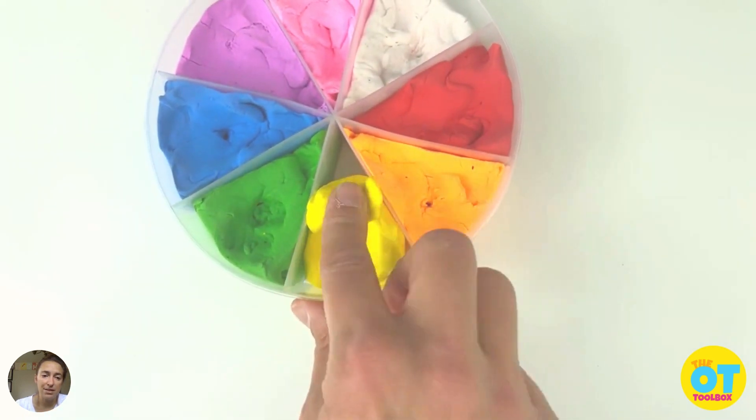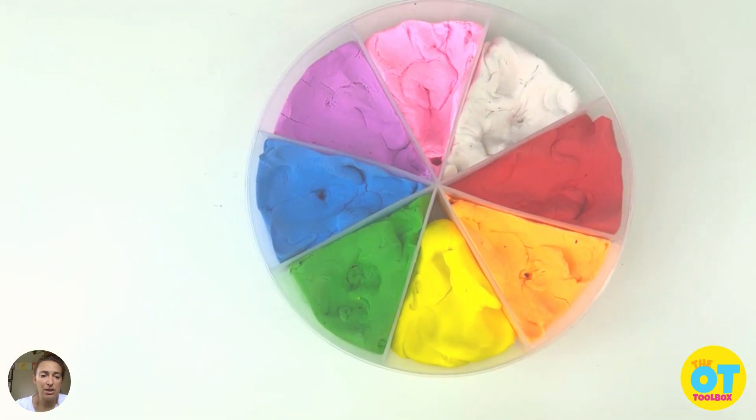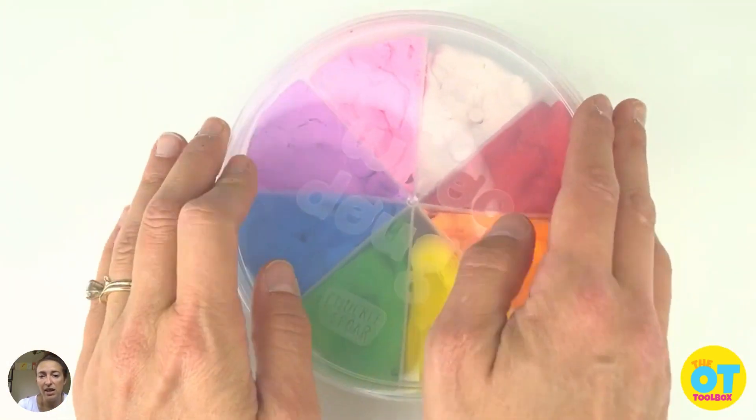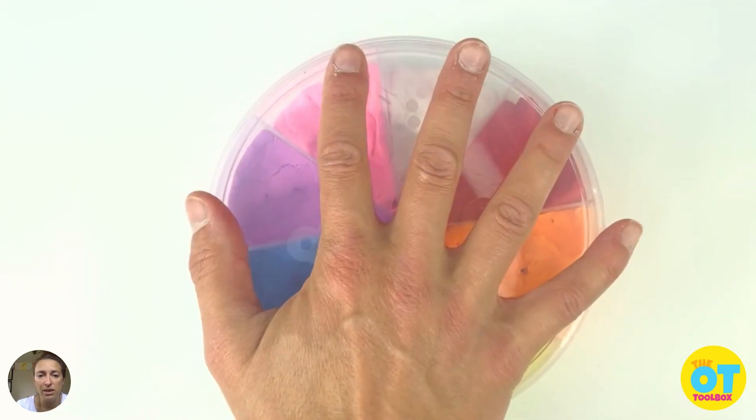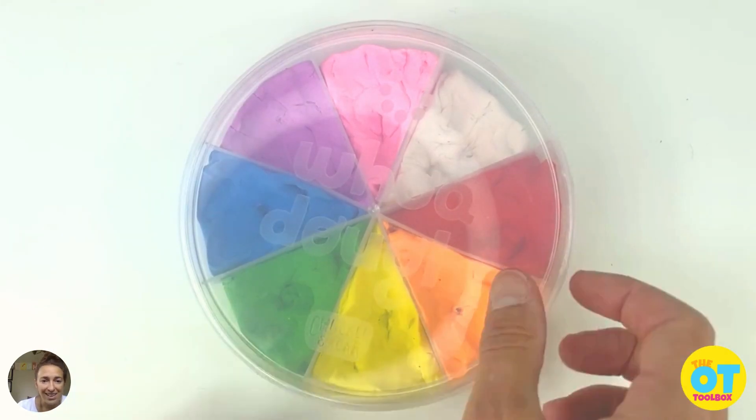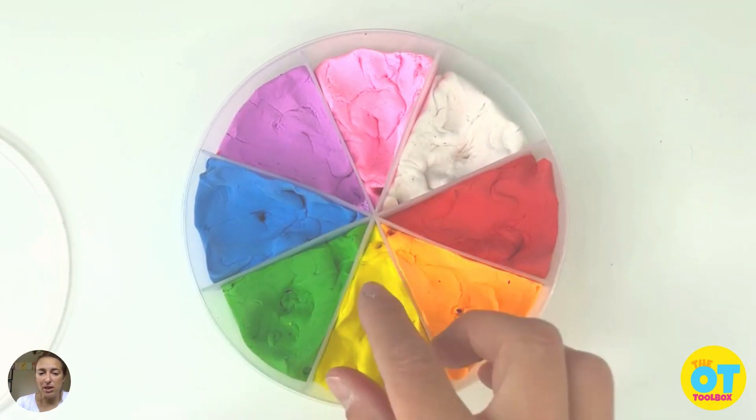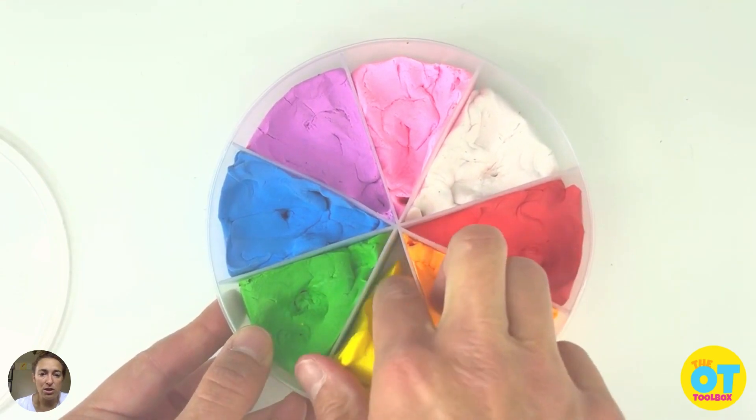That's it. That's all for the Play-Doh exercises. Press it down into the container. Make sure it's staying in there and then put that lid on. That's another really great functional exercise. And that's all for today. So have fun with this exercise. Let me know how this finger strengthening goes with Play-Doh.